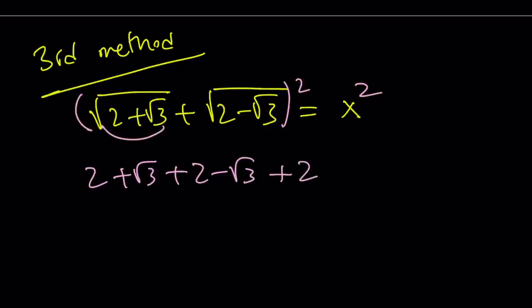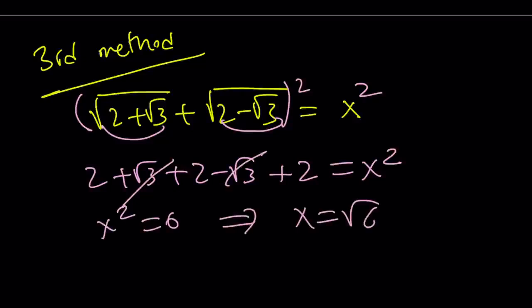And that gives us the first squared plus the second squared plus 2 times ab, which is 2 times 1. And when you multiply these, you get 1. So, this is equal to x squared. Root 3 cancels out. x squared equals 6, which means x is equal to root 6.